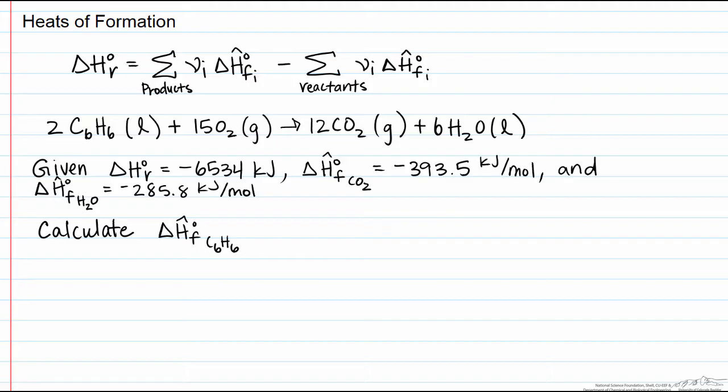Heats of formation are often used to calculate a heat of reaction. The heat of reaction is calculated by summing up the heats of formation of the products multiplied by their stoichiometric coefficients minus the sum of the heats of formation of the reactants also multiplied by their stoichiometric coefficients.